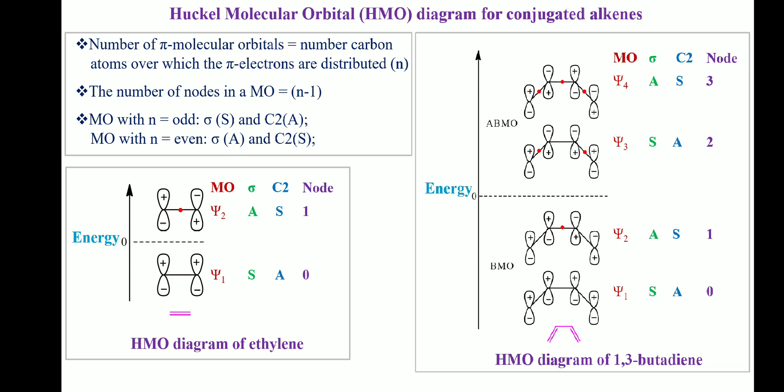We will first discuss the Huckel molecular orbital diagram of ethylene, the simplest alkene. In ethylene, there are two carbon atoms over which the pi electrons are distributed, so the number of pi molecular orbitals will be two. psi1, below the dashed line, is bonding, while psi2, above the dashed line, is anti-bonding. psi1 with n equal to odd has a plane of symmetry, while psi2 with n equal to even has a C2 axis of symmetry. According to the n−1 rule, psi1 has 0 nodes and psi2 has 1 node, where red dots represent nodes.